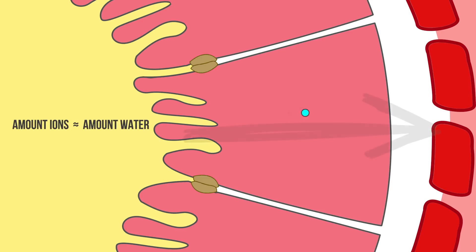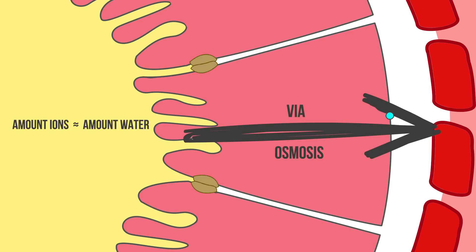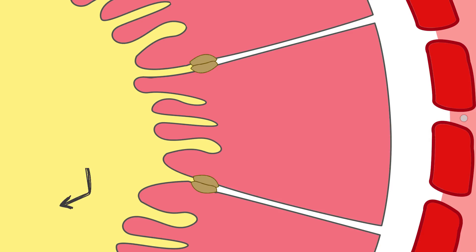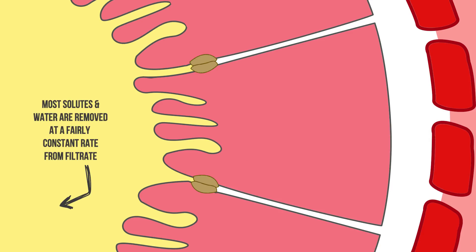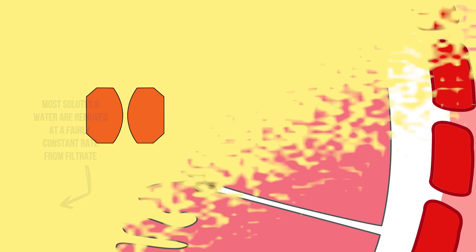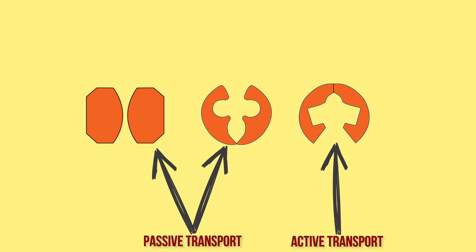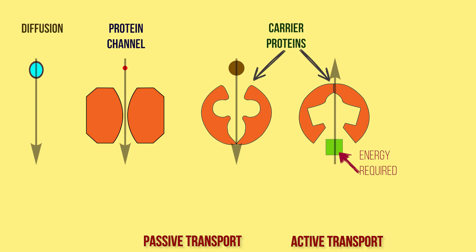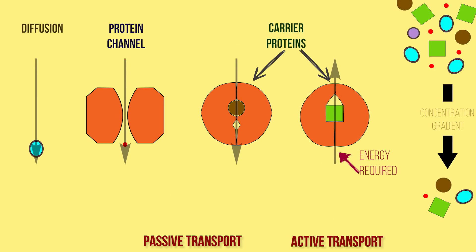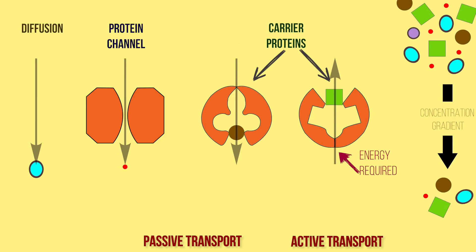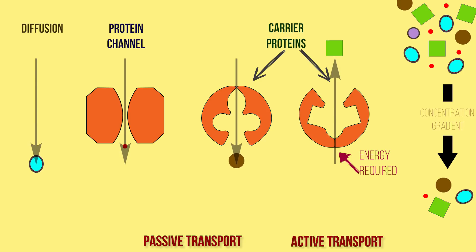An equivalent amount of water leaves the tubular filtrate and passes into the blood capillaries via osmosis. Most of the solutes and water are removed from the filtrate at a fairly constant rate.